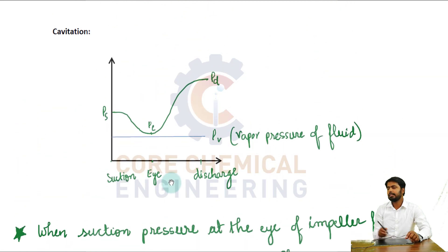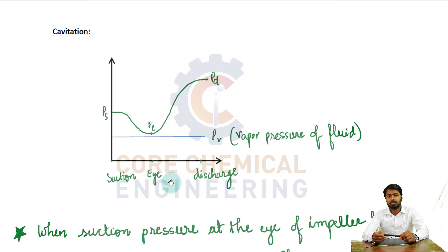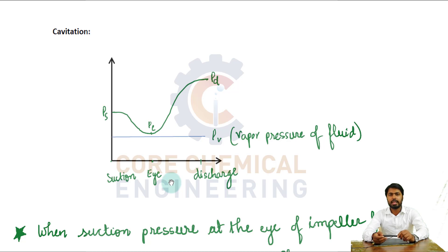That's all for this video. I have tried to explain in a simple way: what is a centrifugal pump, how it operates, the working mechanism, components, cavitation, priming, the difference between system head curve and head developed by the pump, the operating point, and series and parallel operation of pumps. Thank you so much. If you liked this video, please subscribe to this channel, and let me know in the comment box if you want to know anything else or have any feedback.